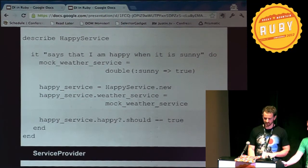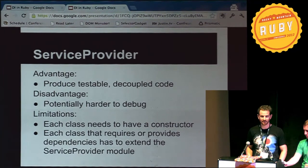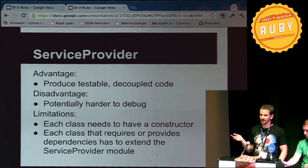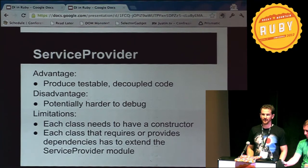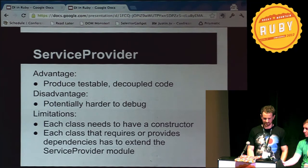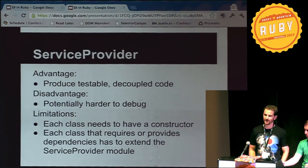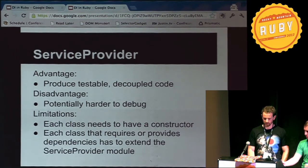Testability is awesome. There are a few disadvantages — some people might say it's harder to debug because you don't know where your WeatherService comes from. It's a piece of magic that appears out of thin air. That is correct, but I think the advantages outweigh the tiny disadvantage. There are a couple of limitations I'm working around right now: each class needs to have a constructor initialize method so that you can put those require and provides around it, and each class has to extend the ServiceProvider module.